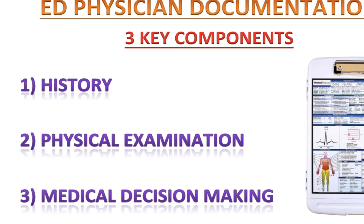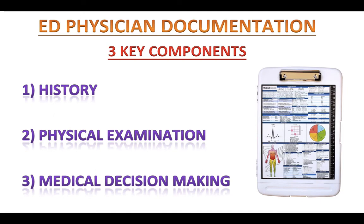Below are three key components you would find on any ED record. First, the history; second, the physical examination; and third, the medical decision-making. Each of these components is evaluated by a set of guidelines, and if you're coding for a physician or professional, you need to know these components very well before you assign an E&M level. On the other hand, if you are coding for a facility — in other words, for a hospital — all you need to know is how to extract the crucial information from the three components before you assign any diagnosis and procedure codes. I'm going to break down each component in more detail in the next slide.